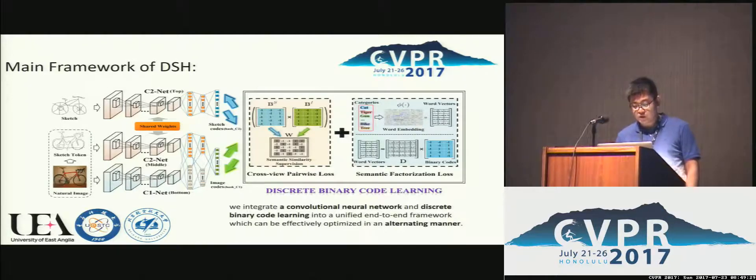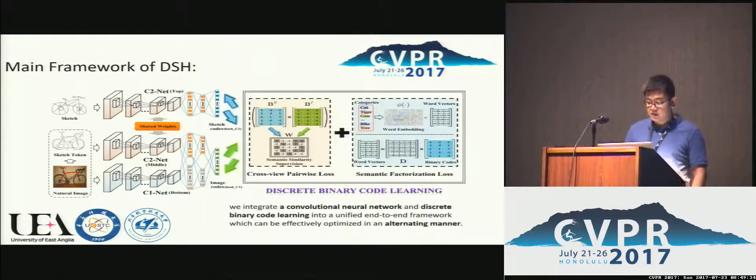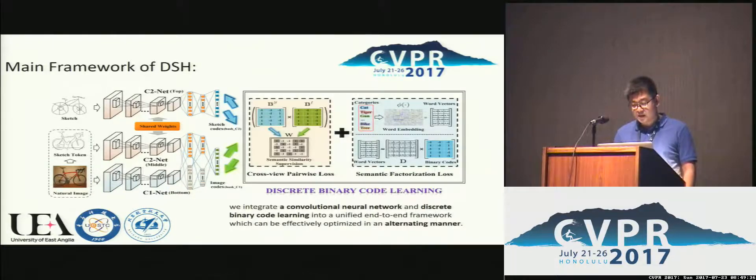With this framework, a convolutional neural network and discrete binary code learning are integrated, which can be effectively optimized in an alternating manner.